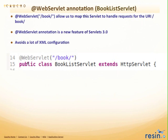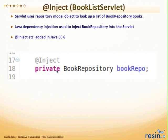The @WebServlet annotation marks the BookListServlet and basically says it's going to handle a particular URI. When the end user enters HTTP localhost 8080 slash bookstore slash book slash, it's going to access this BookListServlet. The @Inject annotation is for CDI to inject the repository.